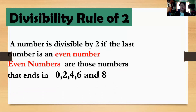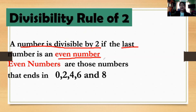A number is divisible by 2 if the last digit is an even number. Even numbers are those numbers that end in 0, 2, 4, 6, and 8. So, remember that. A number is divisible by 2 if the last digit is an even number.